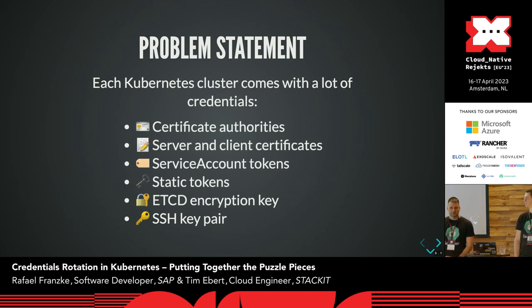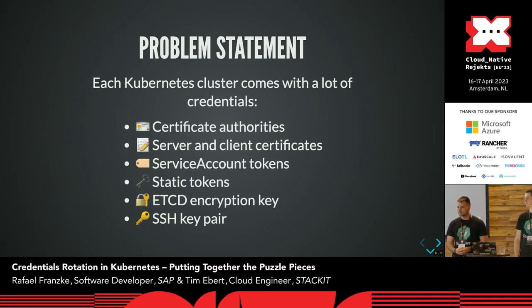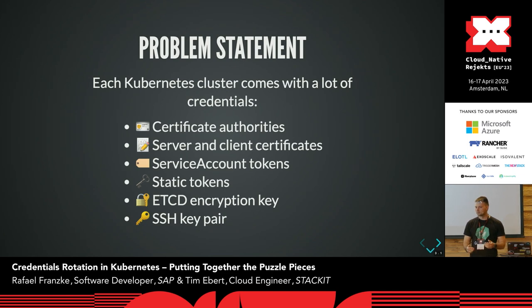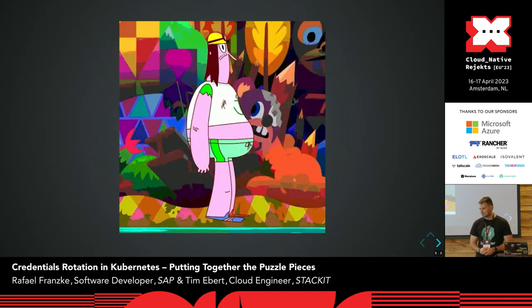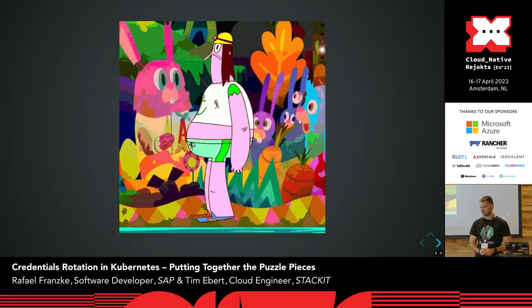If you have set up your Kubernetes cluster yourself, or if you're just using one, then you are probably aware of the vast majority of credentials that come with such a cluster. There are CAs and certificates, tokens and keys of various kinds. The Kube API server talks to etcd with a client certificate, pods use service account tokens to talk to the API server, secrets need to be encrypted in etcd, and there are human users with kubeconfigs or SSH keys to interact with the nodes. If you think about managing and rotating all these things, don't worry if you start to feel overwhelmed — that's how we felt when we started looking into this subject over the past year.